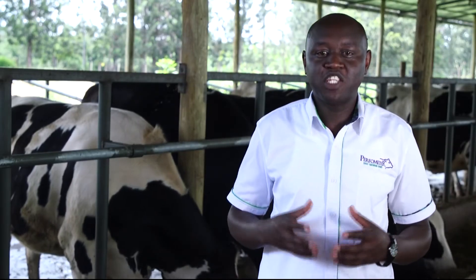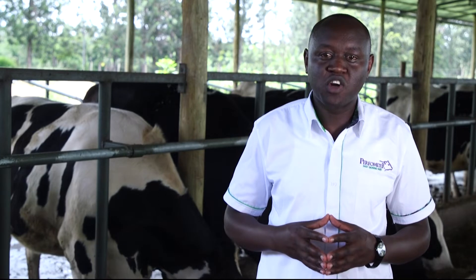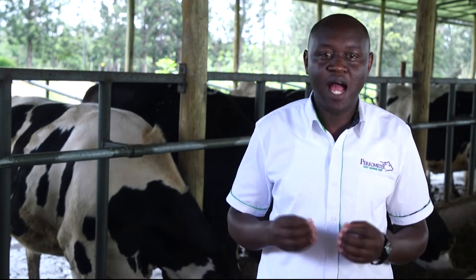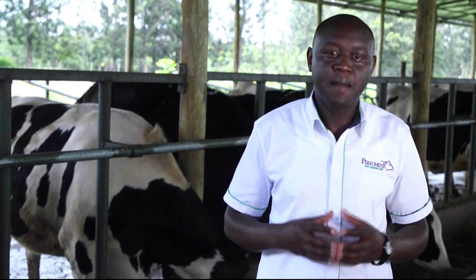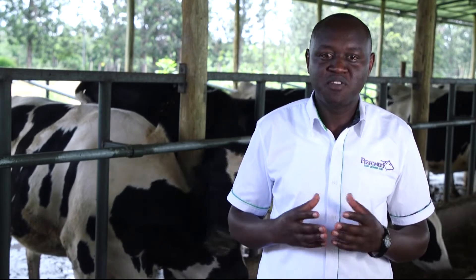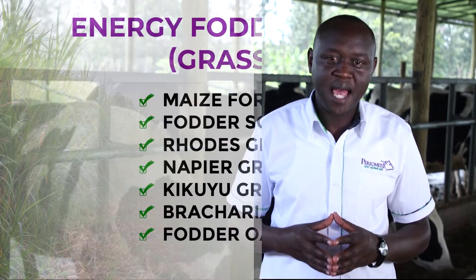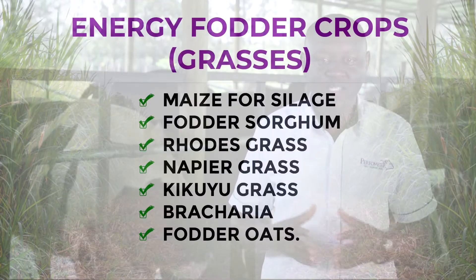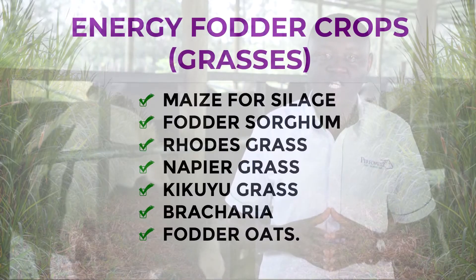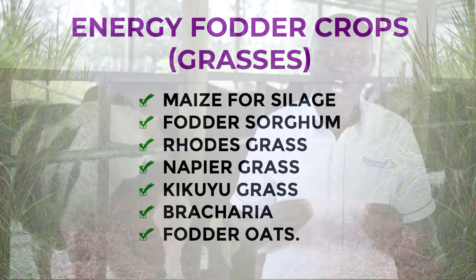The major energy fodder crops grown in Kenya are maize for silage, fodder sorghum, rose grass, napier grass, kikuyu grass, bracharia, and fodder oats.